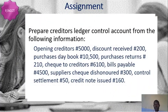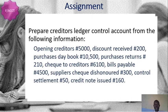Now we have an assignment. Prepare the Creditor's Ledger Control Account from the following information: opening creditors 5,000 Naira; discounts received 200 Naira; purchases (credit) 10,500 Naira; purchases returns 210 Naira; cheque to creditors 6,100 Naira; bills payable 4,500 Naira; suppliers' cheque dishonoured 300 Naira; control settlement 50 Naira; and credit notes issued 160 Naira. You can work with this assignment — it is very easy.